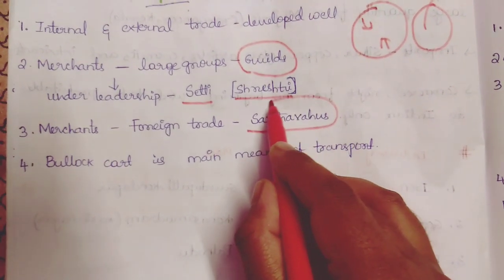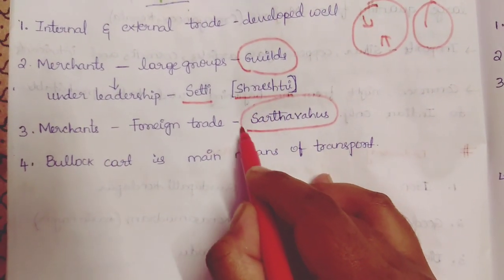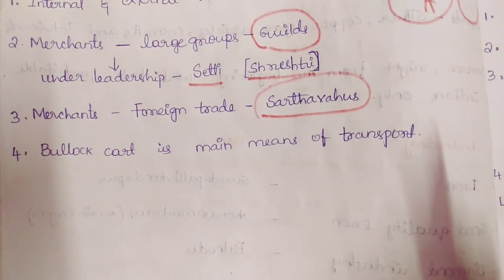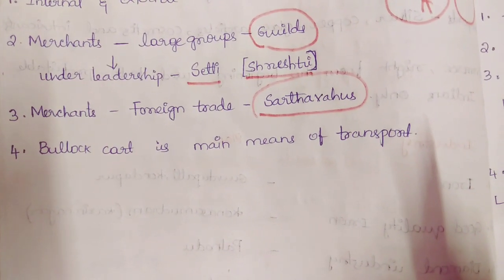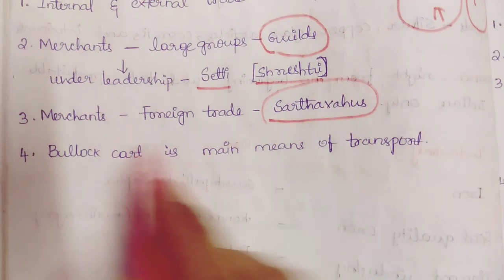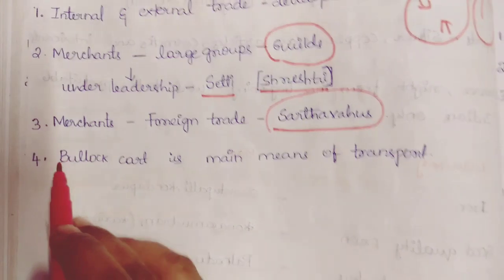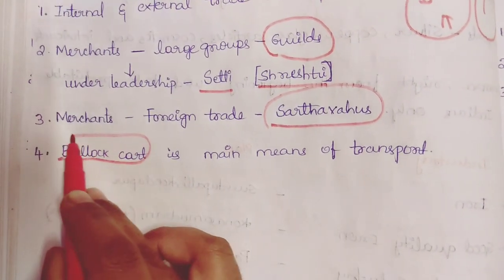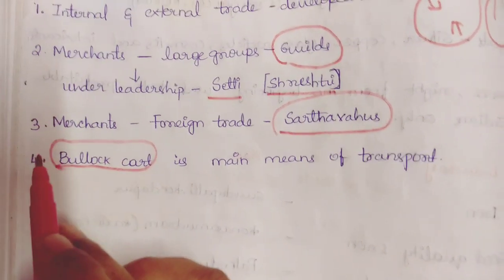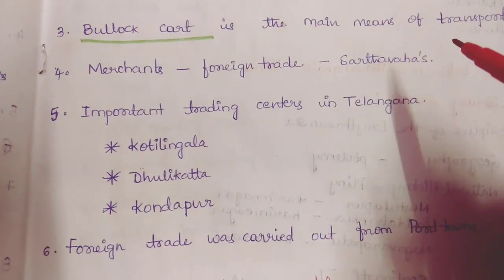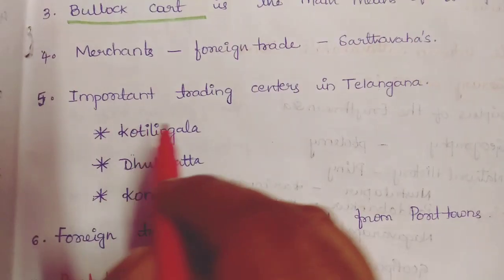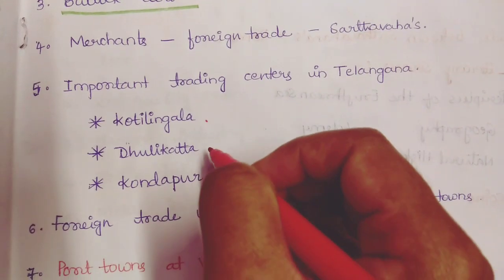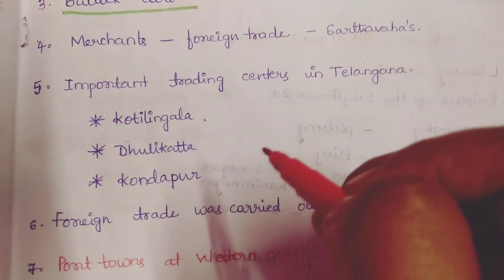Sadavahus are the merchants who trade with foreigners. The main means of transport for trading in the Satavahana period was the Bullakat. Important trading centers in Telangana are Koti Lingala, Doolikatta, and Kondapur.